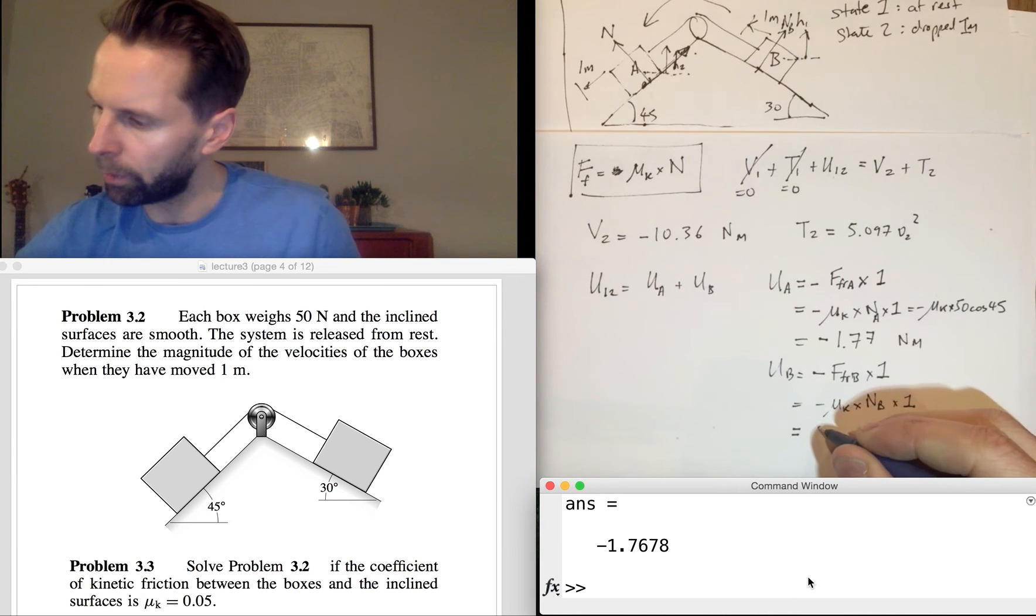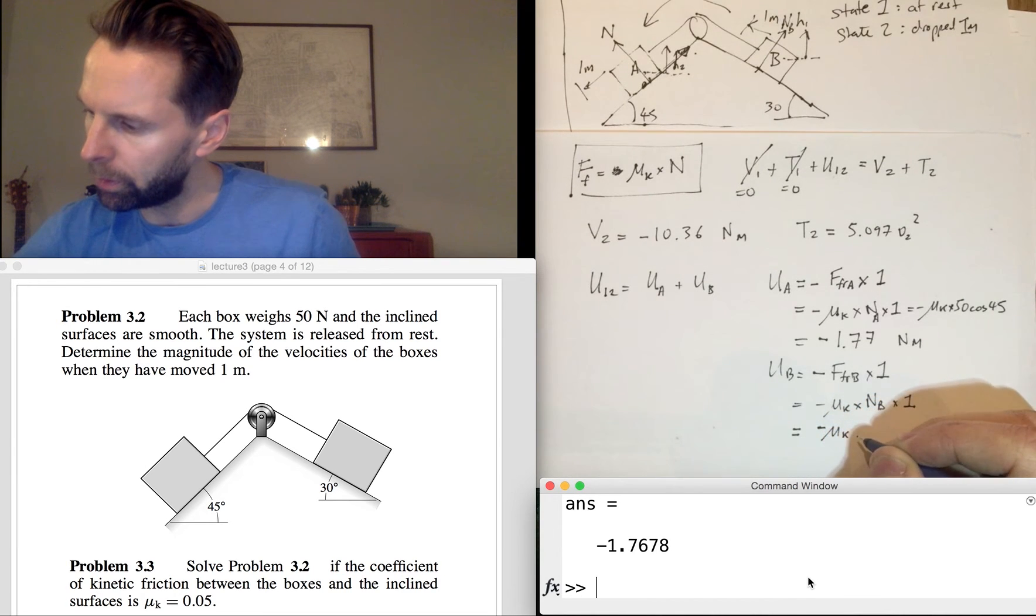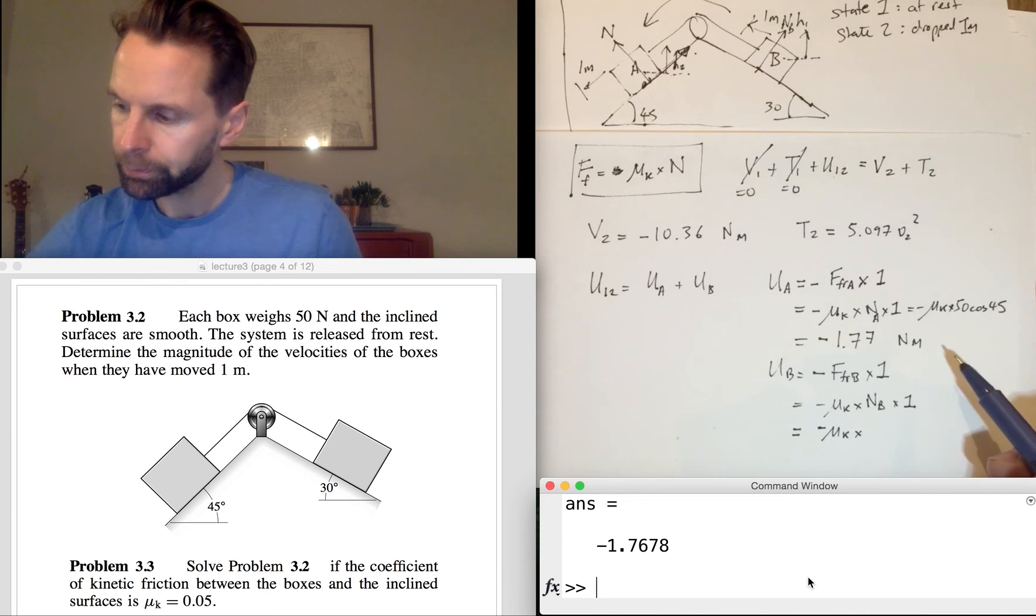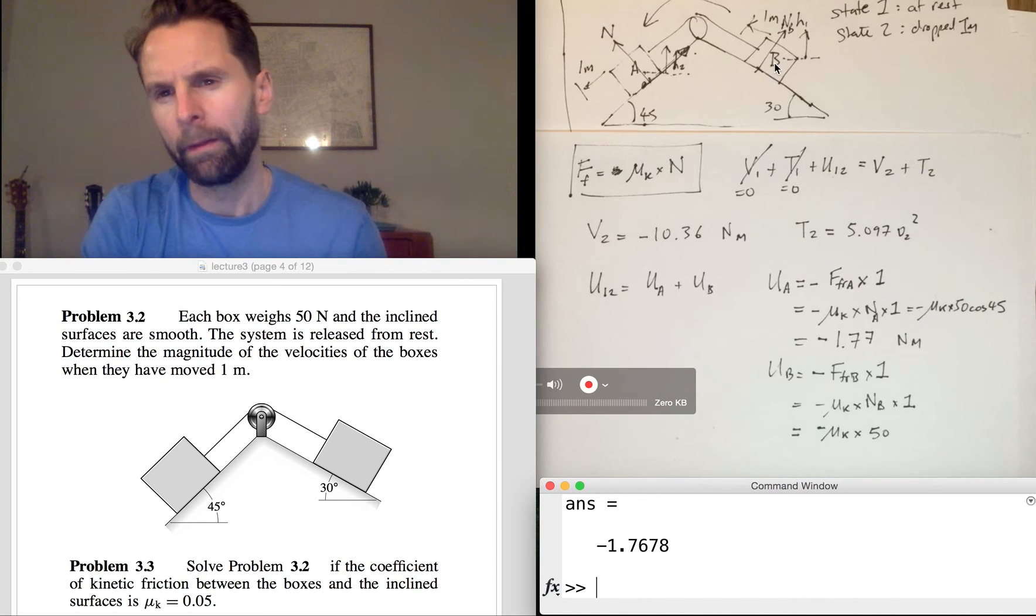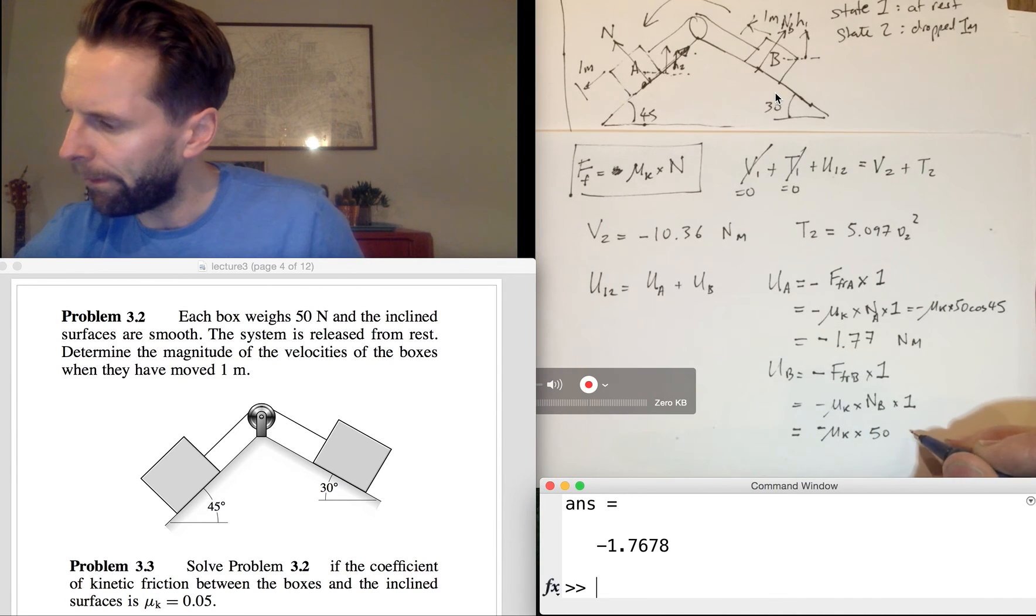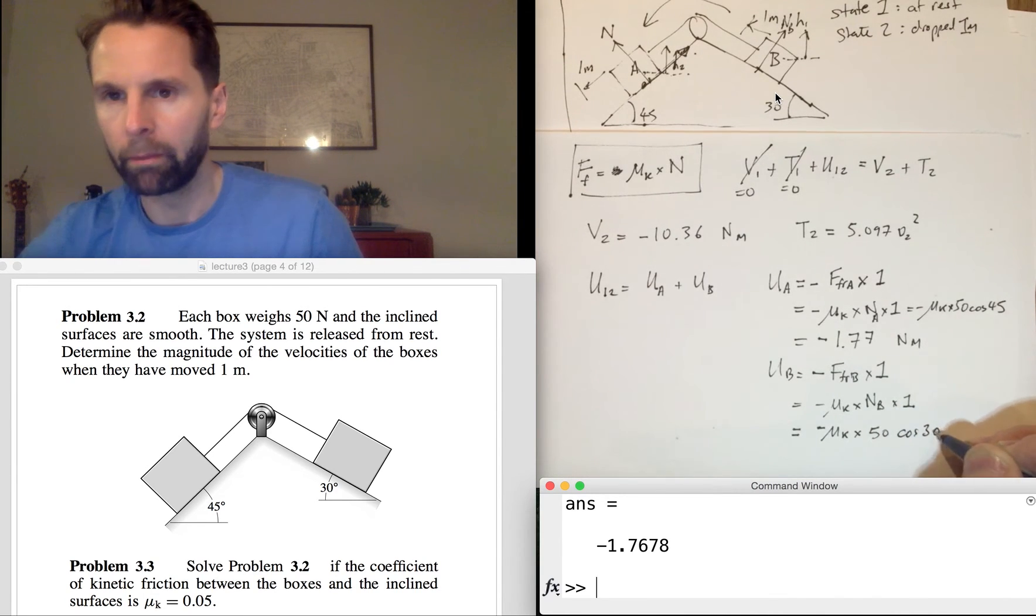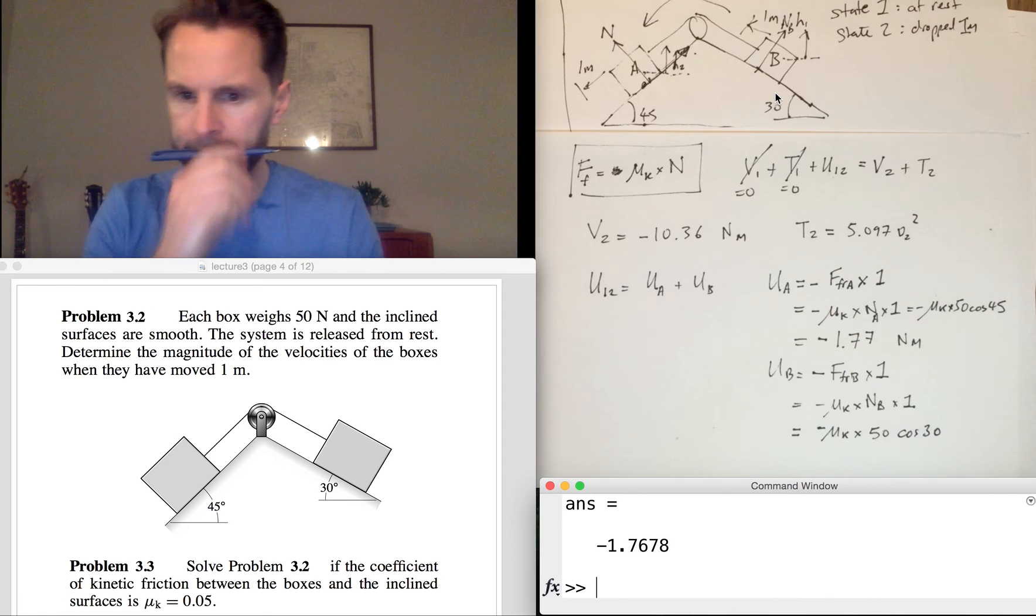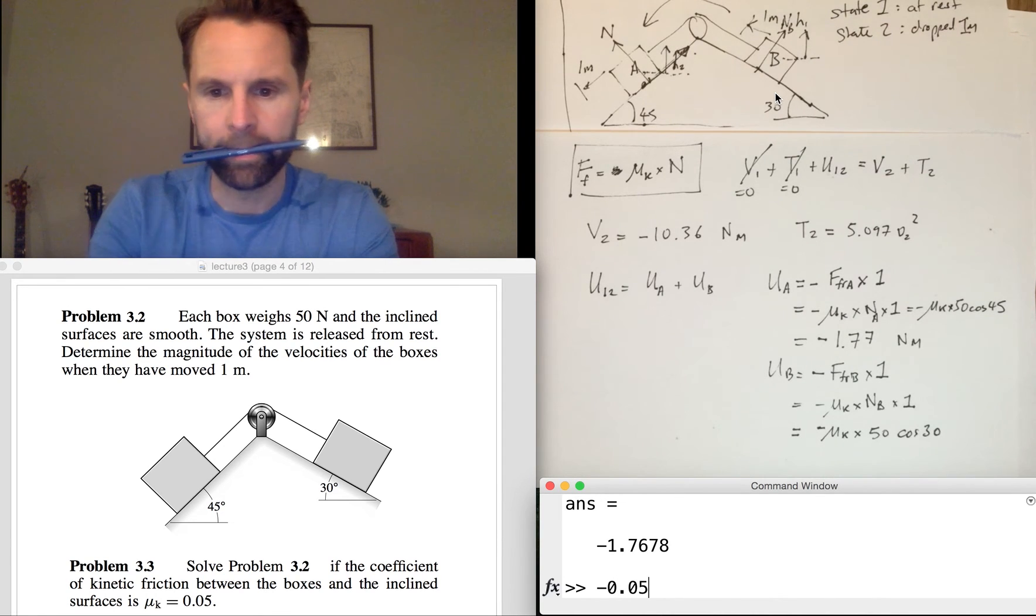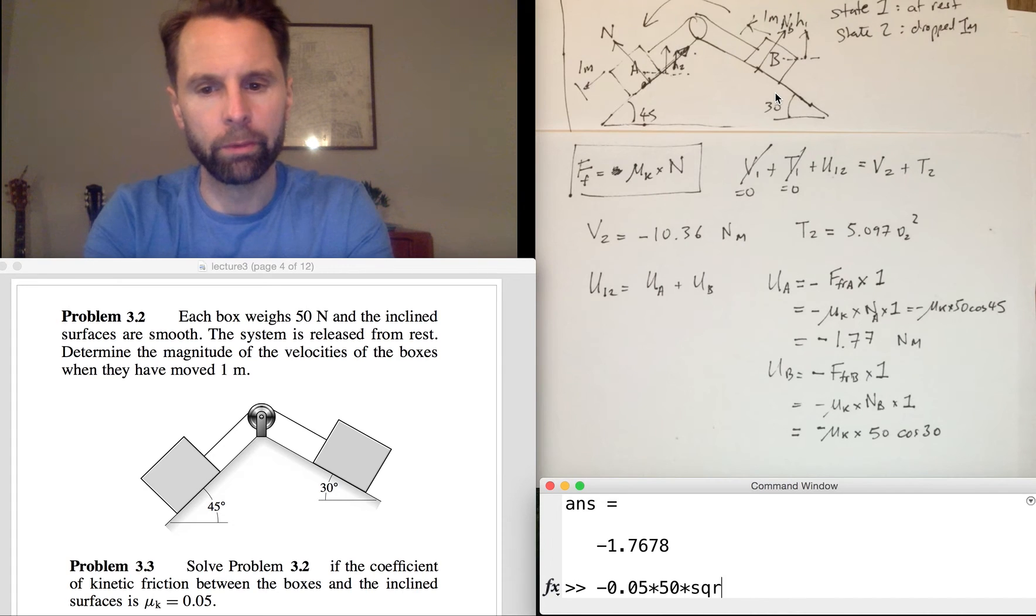Let's work out what the normal reaction is. It's 50 and this time if you want this component down here it's going to be 50 cos 30. And that equals minus 0.05, the kinetic friction coefficient, times 50 times cos 30 which is root 3 over 2. So that equals minus 2.17.